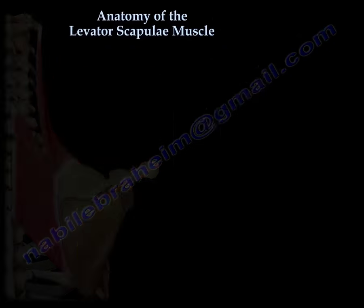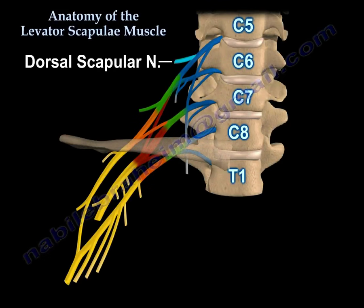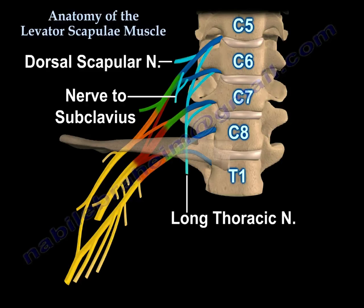Note the arrangement of the dorsal scapular nerve as it comes from C5. C5 and C6 will give the subclavius. C5, C6, and C7 will have the long thoracic nerve and will give the serratus anterior — that's very important for exams.